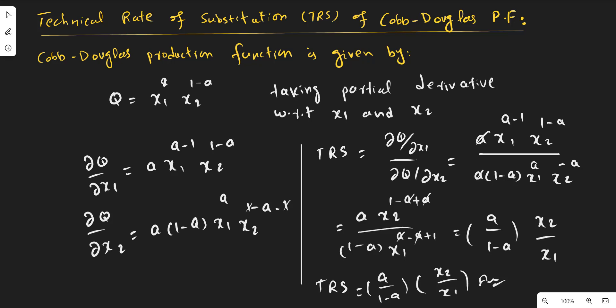If we take the partial derivative of this function with respect to x1, we will apply the power rule. The power will come over here, and the power will be reduced by 1, and x2 remains as it is. So we have taken the partial derivative of the production function with respect to x1, and x2 to the power x1 remains as it is.